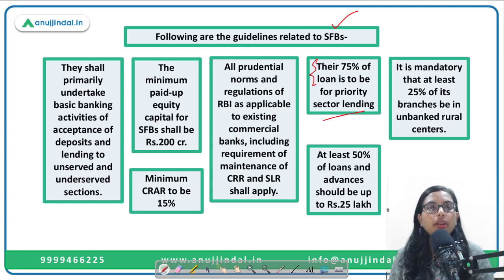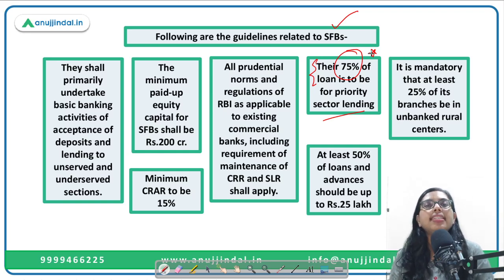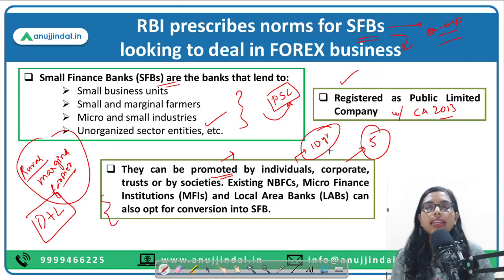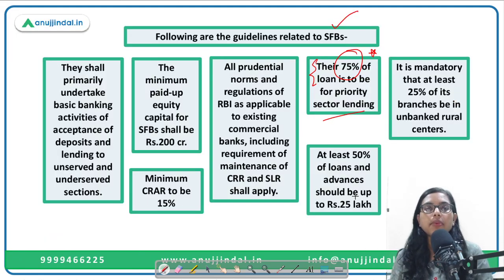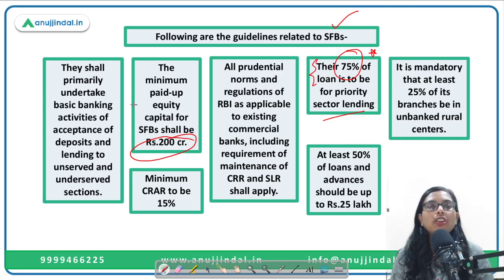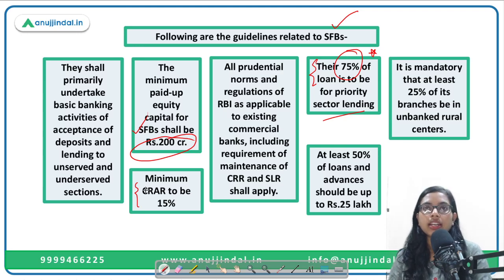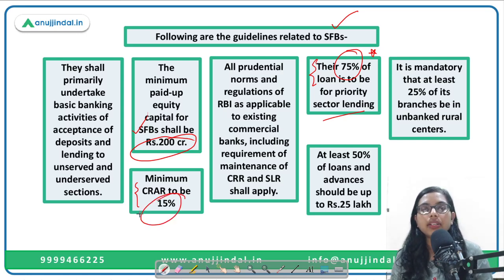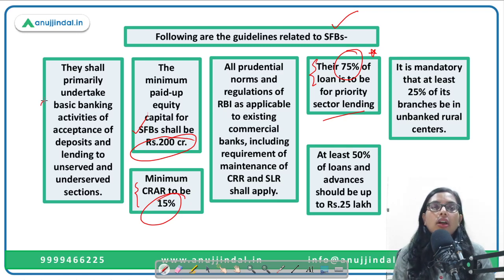Key guidelines for small finance banks: first, at least 75 percent of loans must be for priority sector lending. Second, minimum paid-up equity capital should be 200 crores — earlier it was 100 crores but updated to 200 crores. Third, the capital adequacy ratio must be at least 15 percent, maintained as a buffer to meet adversities.